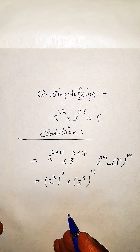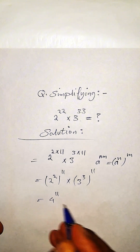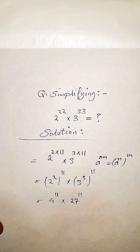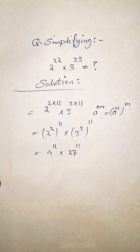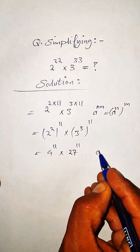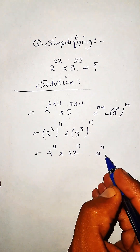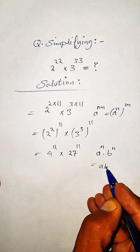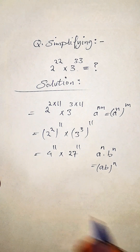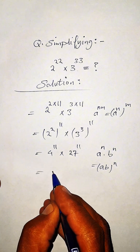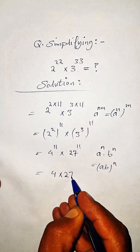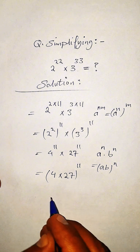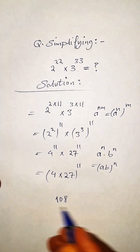This becomes 4 to the power of 11 times 27 to the power of 11. And this is in the form of a to the power of n times b to the power of n, which equals (a times b) whole to the power of n. And this becomes 4 times 27, whole to the power of 11. And 4 times 27 becomes 108 to the power of 11.